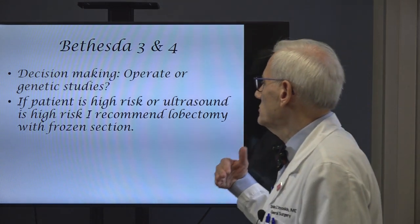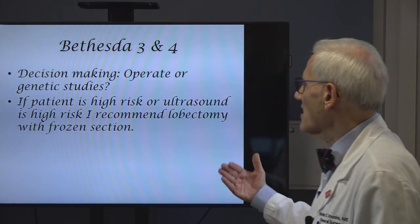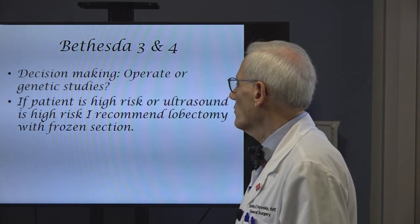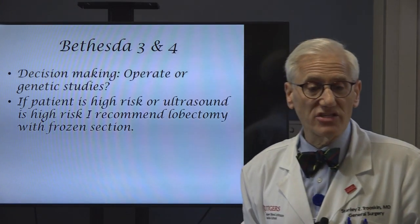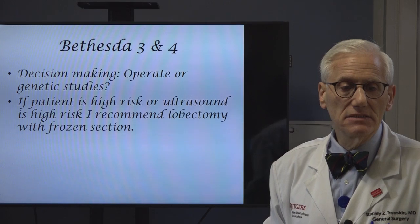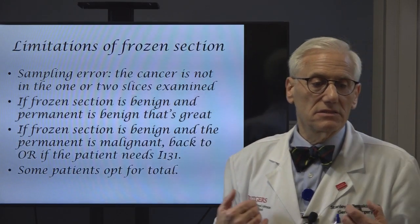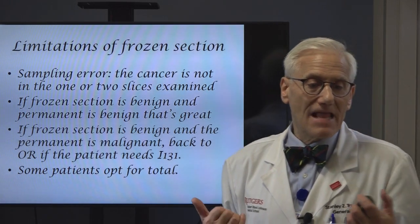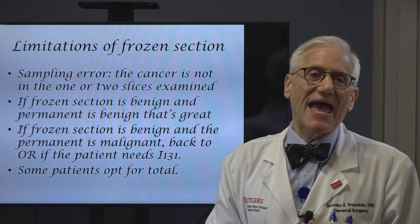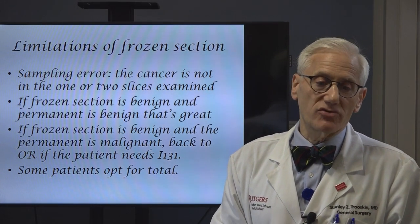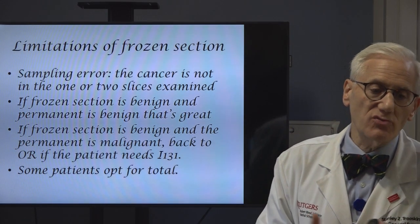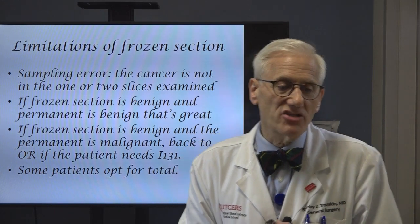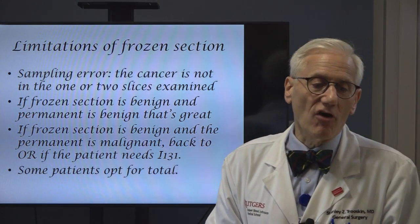If the patient's high risk or the ultrasound's high risk, I recommend lobectomy with frozen section. Some patients will say, 'Look, I don't want any risk of going back — take out both sides.' If there are nodules on both sides, we should take out both sides. And I'll listen to the patients and what they prefer me to do.